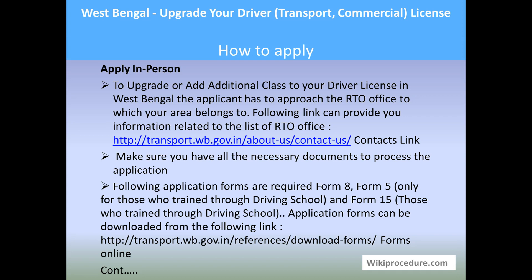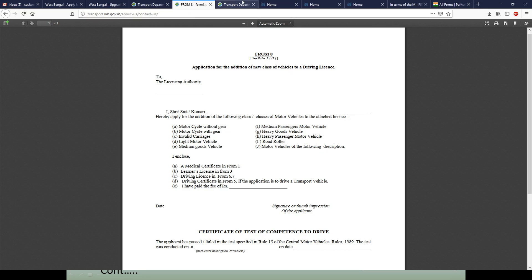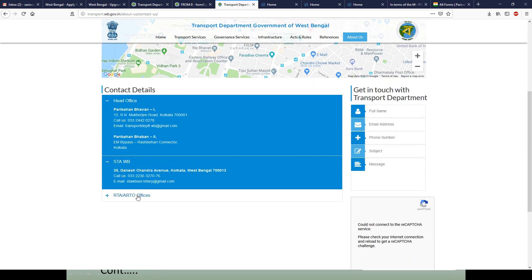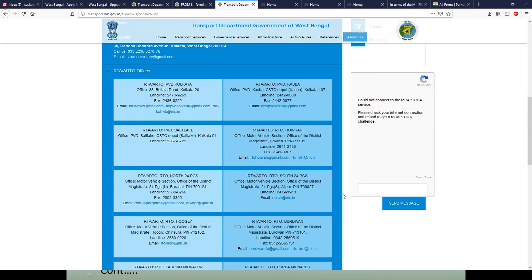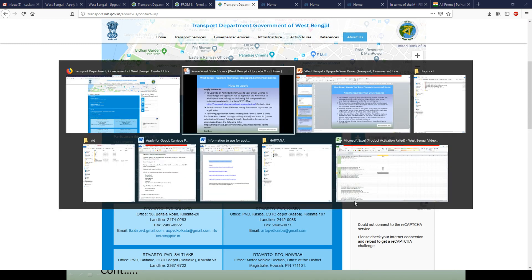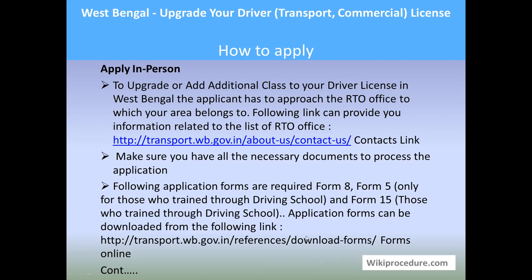To apply in person to upgrade or add an additional class to your driver license in West Bengal, the applicant has to go to the RTO office concerned for your area. Don't worry if you don't know the local address — click the contact link provided here to reach the page on the West Bengal portal which has contact details you can filter further to get the information of the local RTO office. Make a note of it and go there to apply. Make sure you have all the necessary documents, because missing even one document will cause your application to be rejected. You can download the application form through the link already explained.